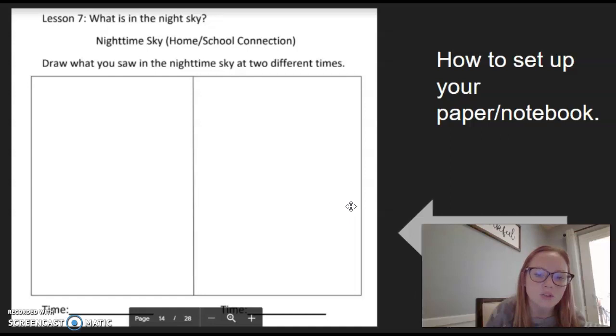What you're going to do is on this side, when it's nighttime outside, you're going to go outside and look in the sky and see what you see and draw a picture of it. And you're going to write the time down here that you went outside.